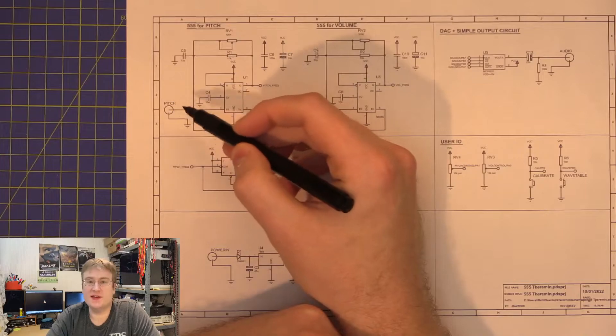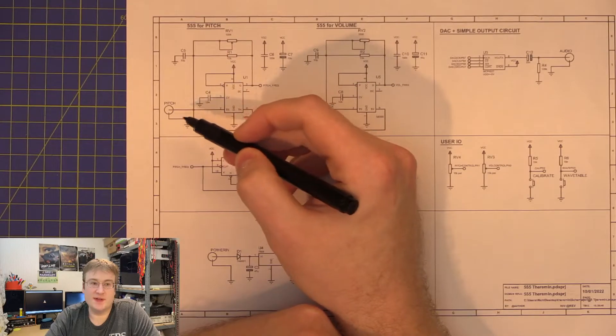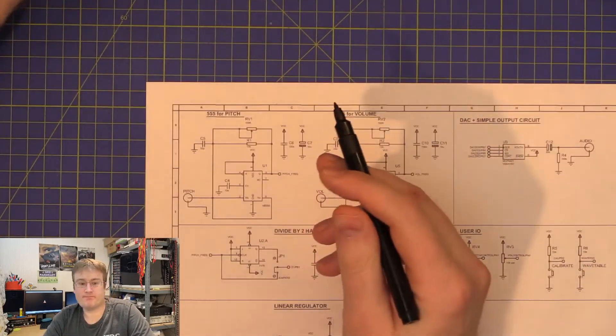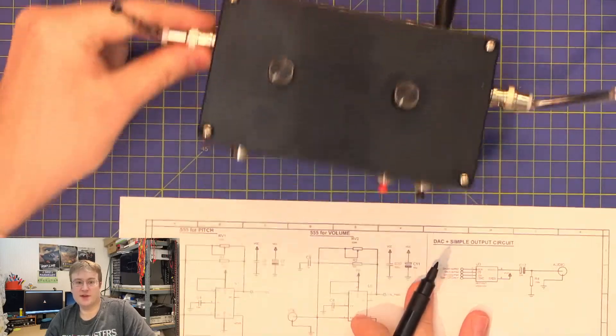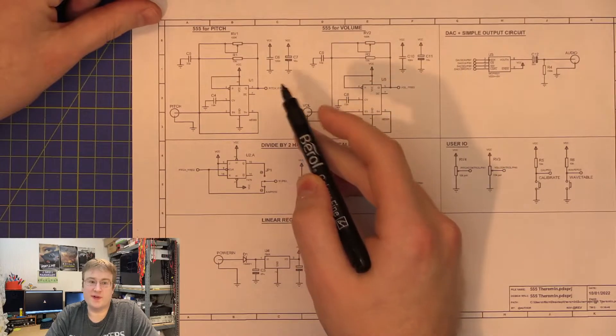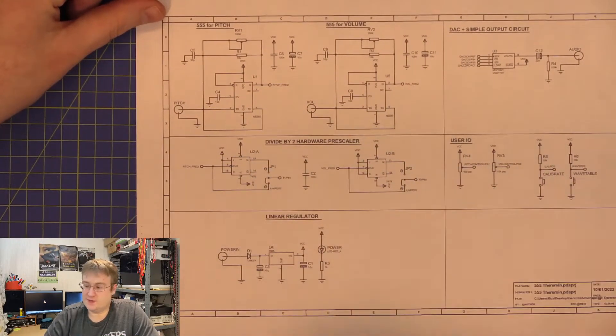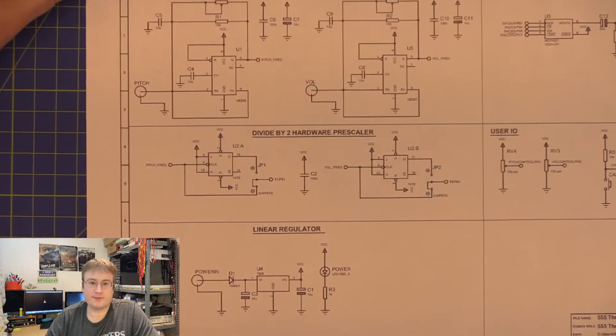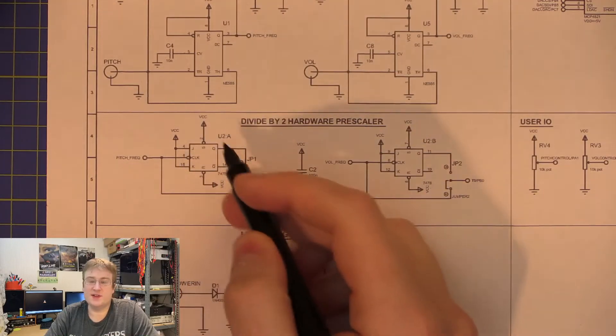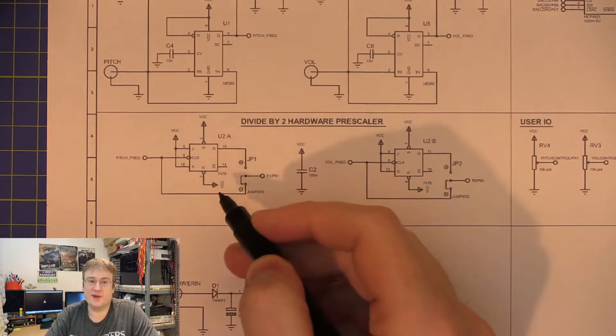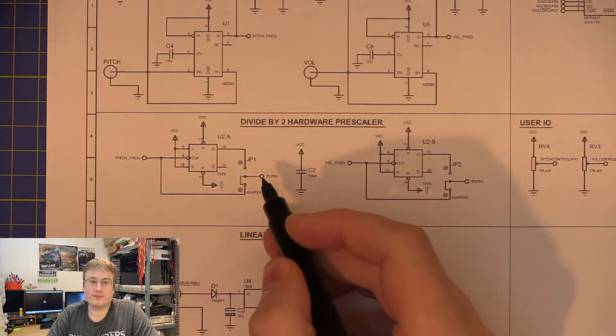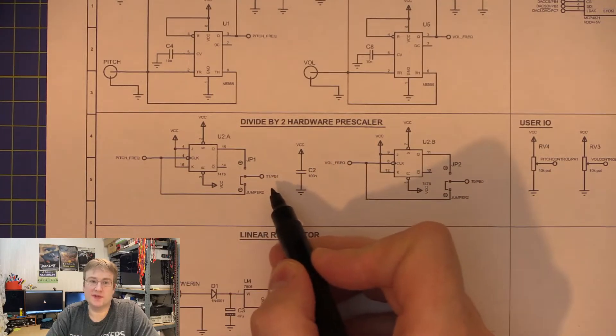Here are the two 555s, so here's the pitch 555 oscillator. This connector here is the BNC on the side of the box which connects to a little telescopic antenna, so that's this over here. You can see that the output of this 555 will either go through a divide by two circuit which is just a toggling JK flip-flop, or it will go direct from the 555 into the clock input of one of the microcontroller's timers.